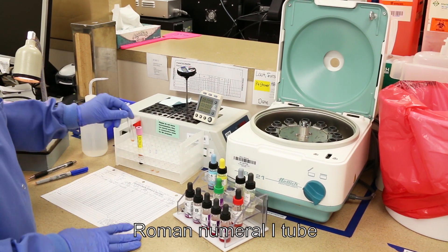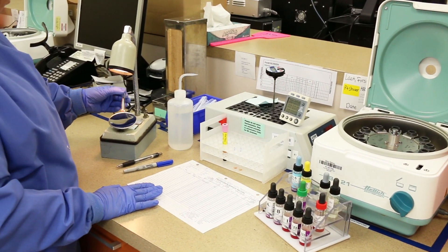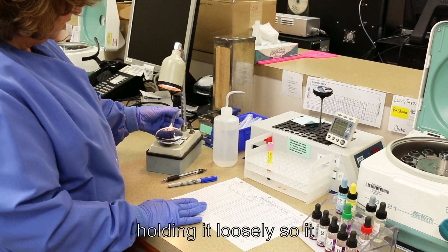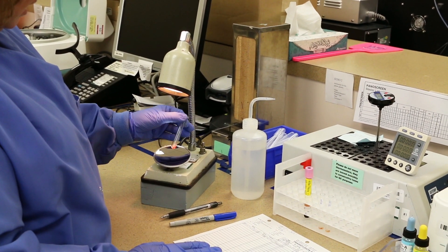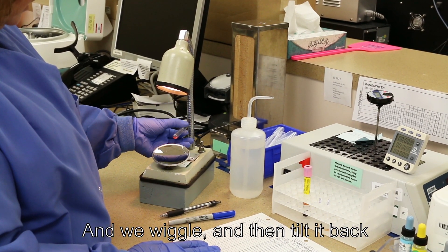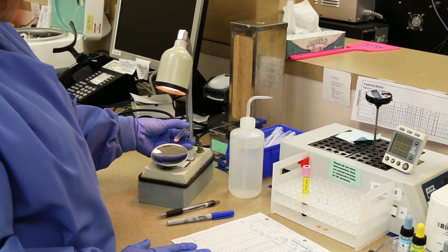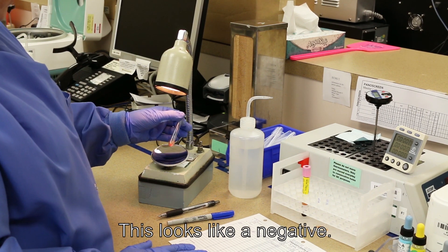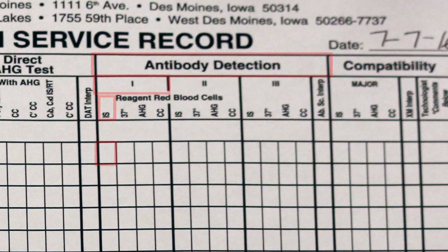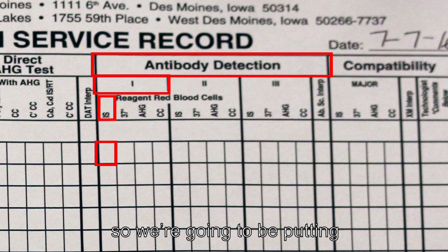So now that I've forced my reaction to happen, I want to take my tubes out, come back in my rack, keeping them in order. So I'm going to take the Roman numeral 1 tube, and we're going to do the same thing as we did with ABL. We're going to do the wiggle and tilt. So we take our tube, holding it loosely, so it can go back and forth. And we're wiggle, and then tilt it back. So you can see if any agglutination goes back up the cell suspension. This looks like a negative. So I'm going to go to my worksheet, and I have a place that says antibody detection, and there's a spot for Roman numeral 1. And again, this is our immediate spin phase, so we're going to be putting a negative here.